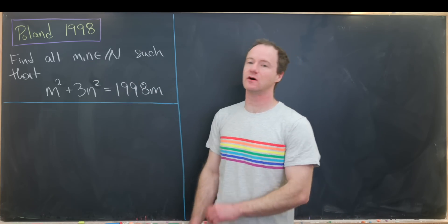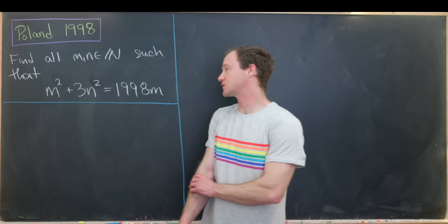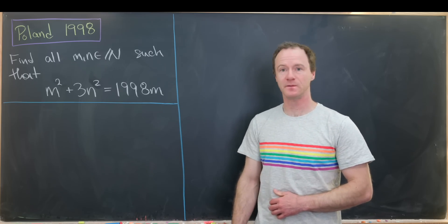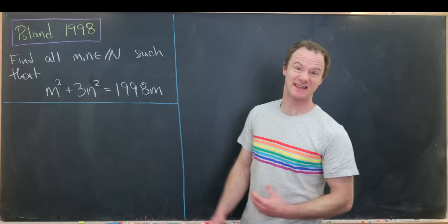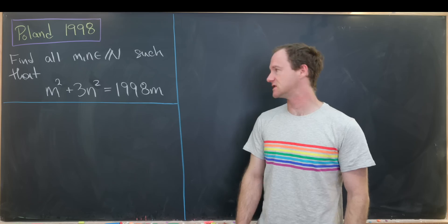Our goal is to find all natural numbers m and n such that m squared plus 3n squared is equal to 1998m. So 1998 because that's the year of this test. Let's get into the solution.